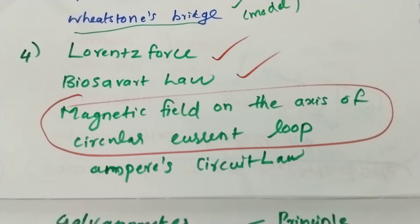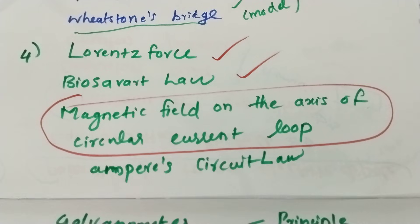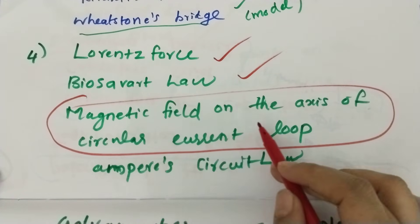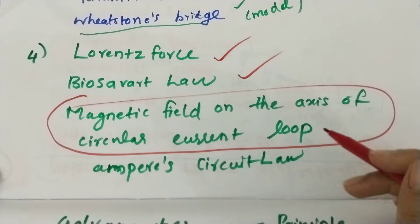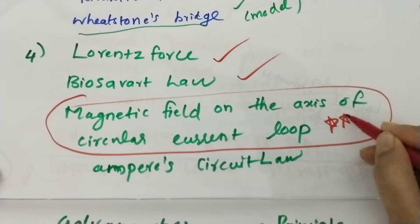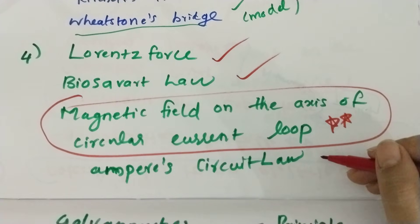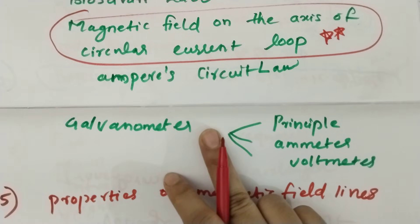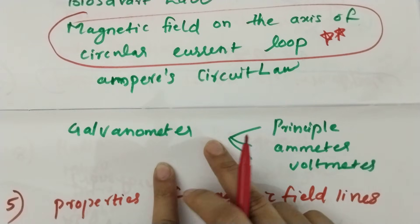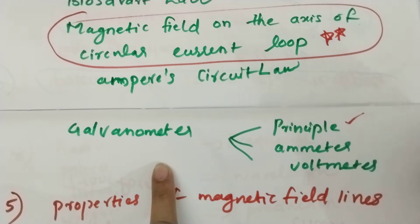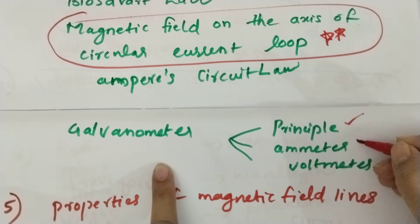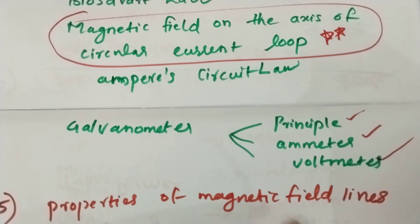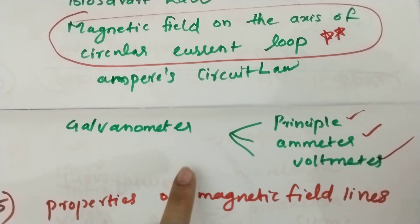Define Lorentz force — Biot-Savart. This is the third important question. It is not a public model — in public, there is an 18-mark metal. Derived expression for magnetic field on axis of a circular current loop — it is 4 marks. There is a high chance in the circuit. This is the principle of galvanometer. How can you convert galvanometer into ammeter? Galvanometer into voltmeter — what is the chance score?